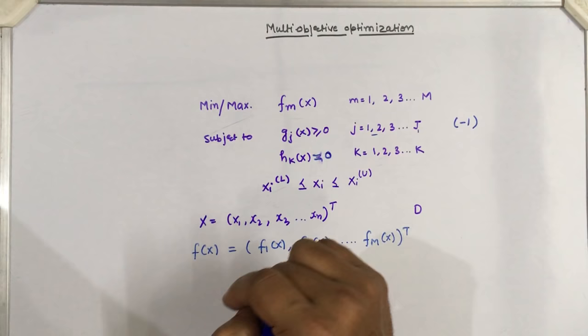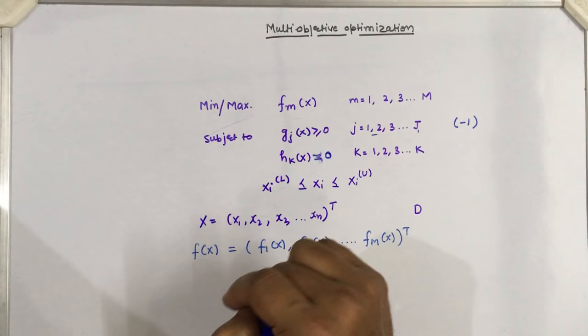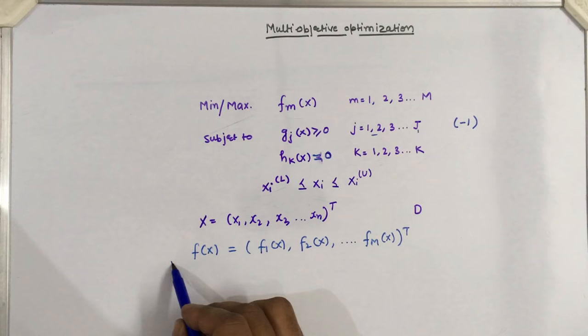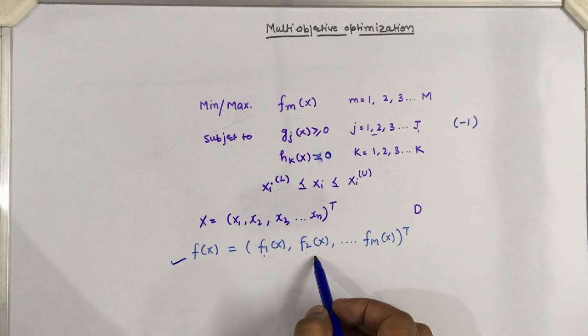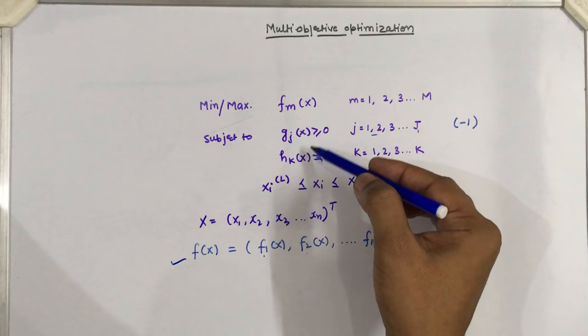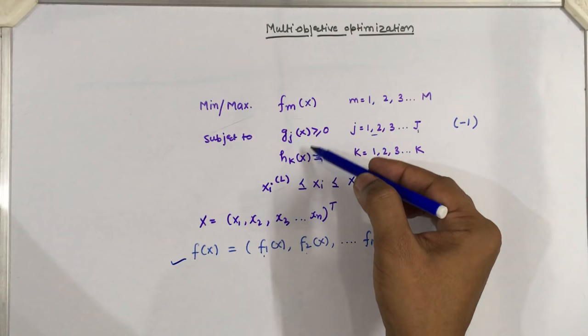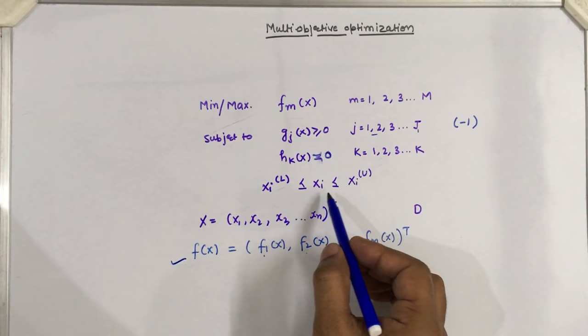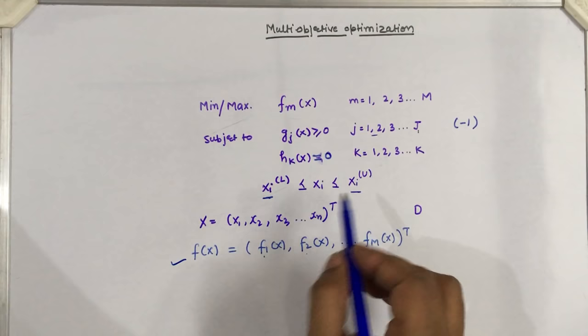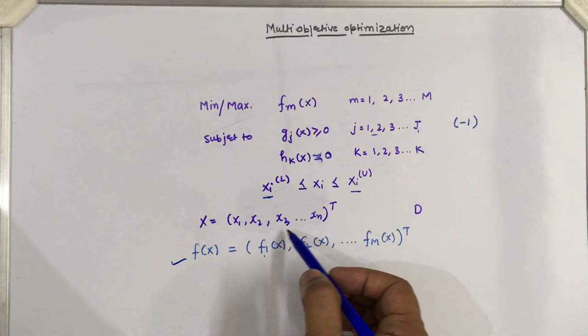The multi-objective optimization problem can be defined as a collection of fitness functions f_m(x): f1, f2, up to fm, where each may be minimized or maximized, subject to two constraint functions g_j(x) and h_k(x), with variable bounds — meaning the variable x must lie between a lower bound and upper bound. Here x is a vector containing n values.